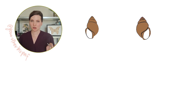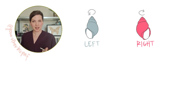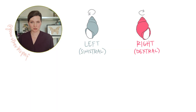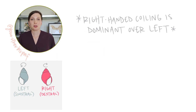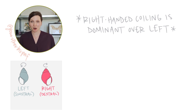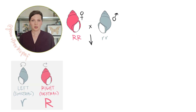In many land snails, the shell can coil to the left or to the right. Your class may be using the terms sinistral and dextral instead of left and right — I'll leave up a little key here. The right coiling allele is dominant, so we'll use big R for the right coiling allele and little r for the left coiling allele.